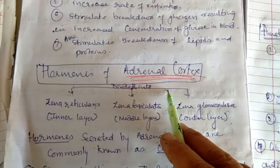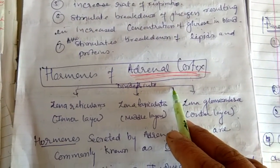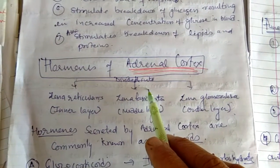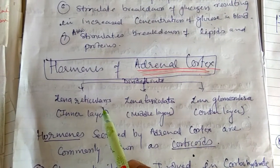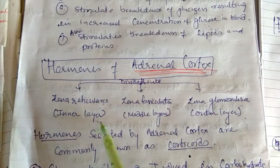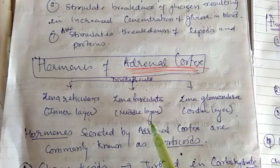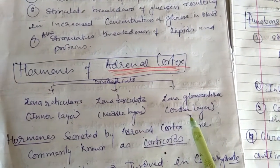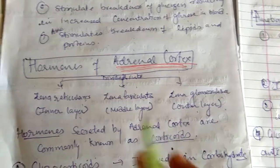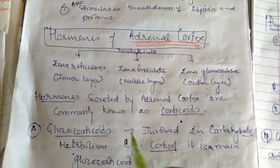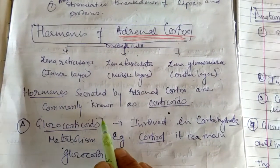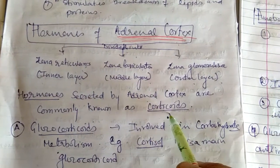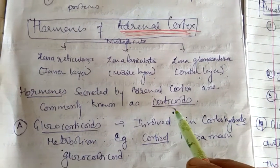Now we are coming to the adrenal cortex. Adrenal cortex can be further divided into three layers: zona reticularis — the inner layer, zona fasciculata — the middle layer, and zona glomerulosa — the outer layer. The cortex has three layers. The hormones secreted by the adrenal cortex are mainly called corticoids.